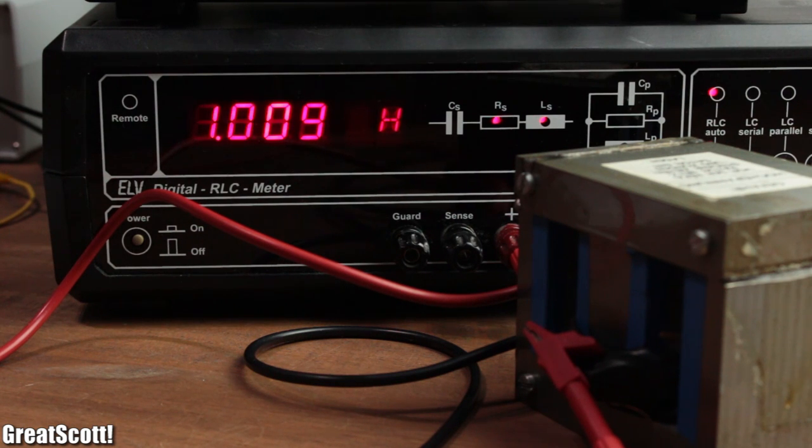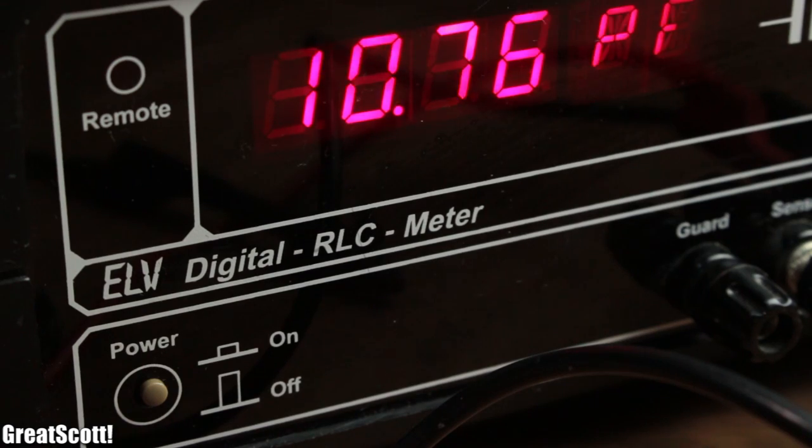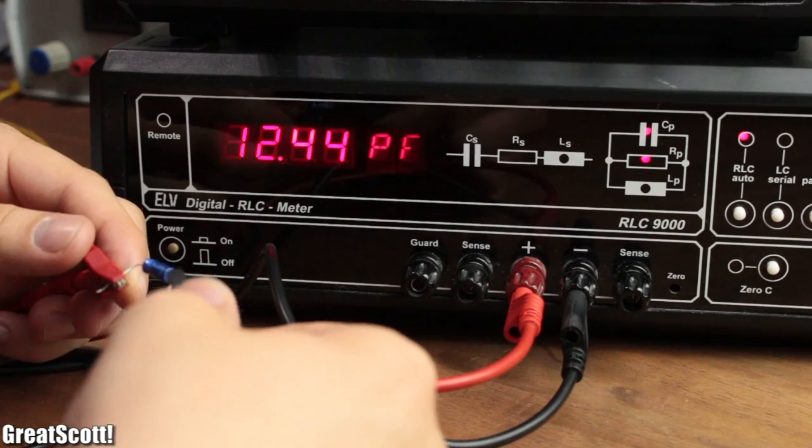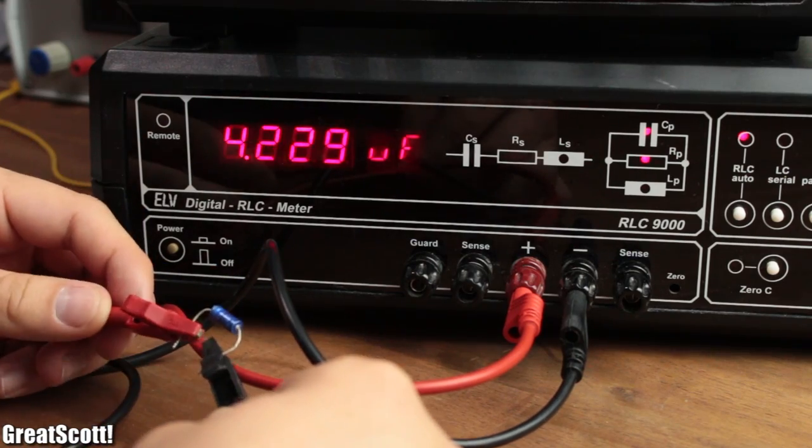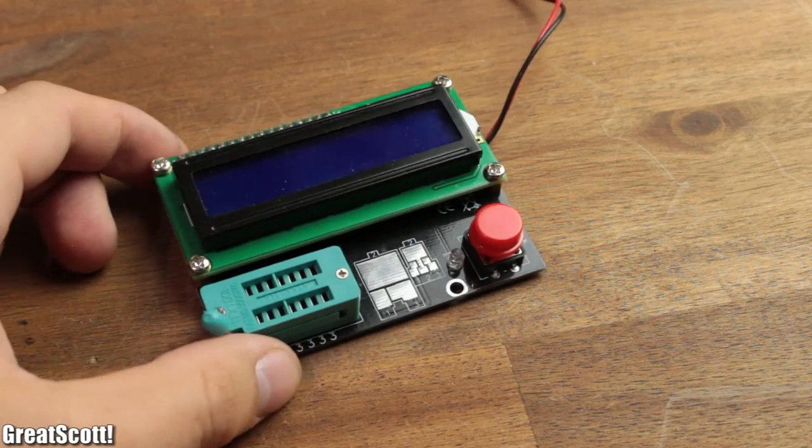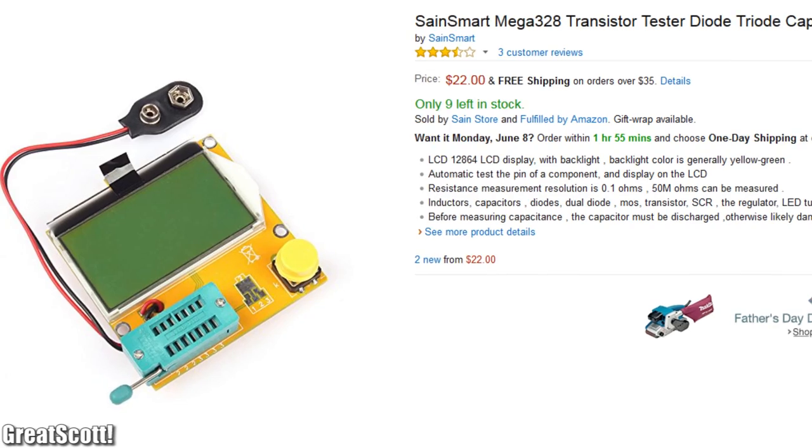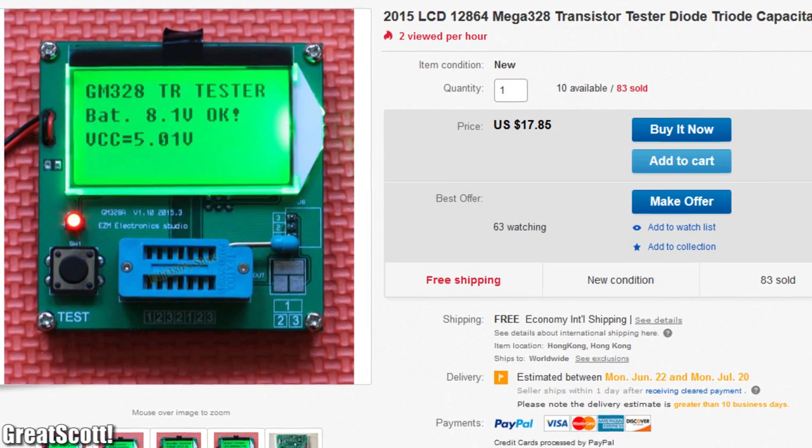At the end, I want to show you an inexpensive alternative to an RLC meter, which I often use to measure inductance or capacity. It's this so-called transistor tester, which you can get from Amazon or eBay for around $20.